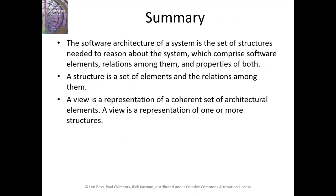In summary, the software architecture of a system is a set of structures needed to understand the system, which includes software elements, relationships between the software elements, and properties of the elements and their relationships. A structure is a set of elements and the relationships between them. A view is a representation of a set of architectural elements and a representation of one or more structures. When we think about describing our software architecture, we're talking about structures; when we talk about documentation describing the architecture, we're talking about views. There's going to be a whole series of these lectures — probably 20 or more — diving into additional details of software architecture.